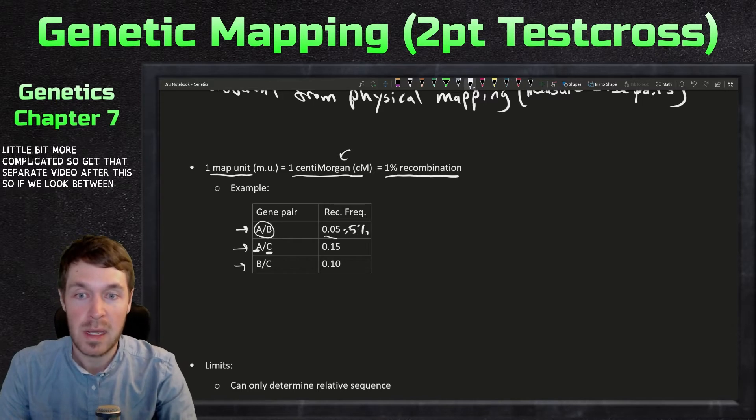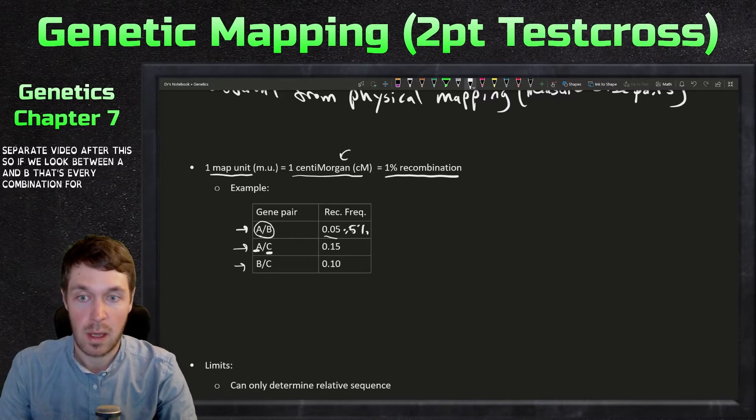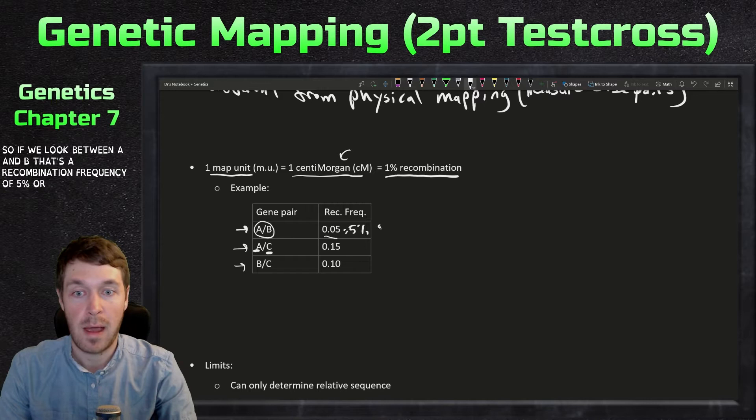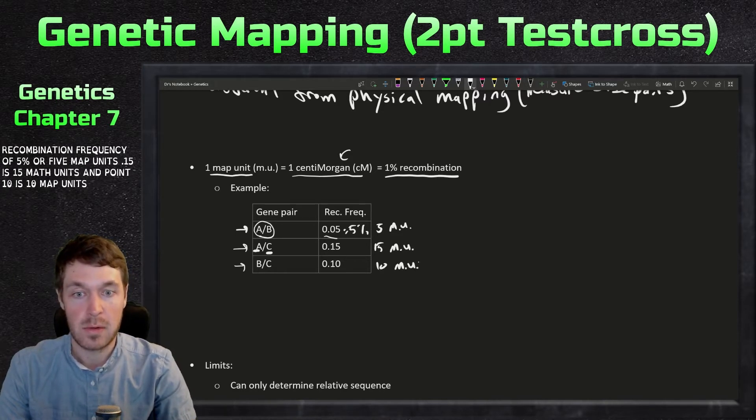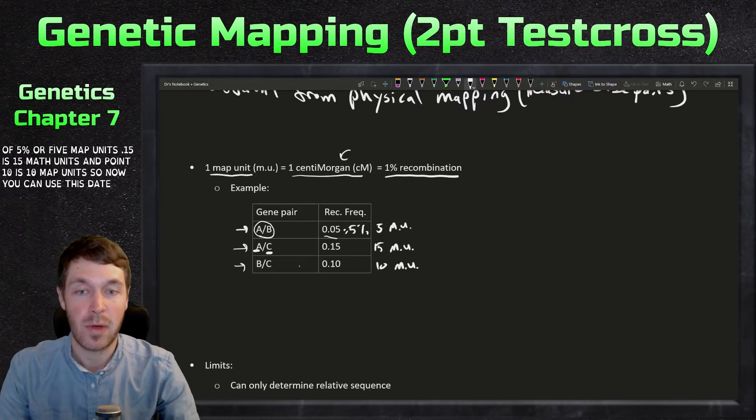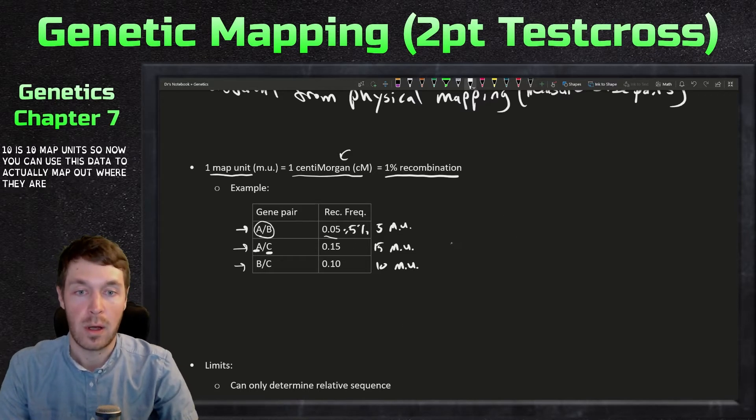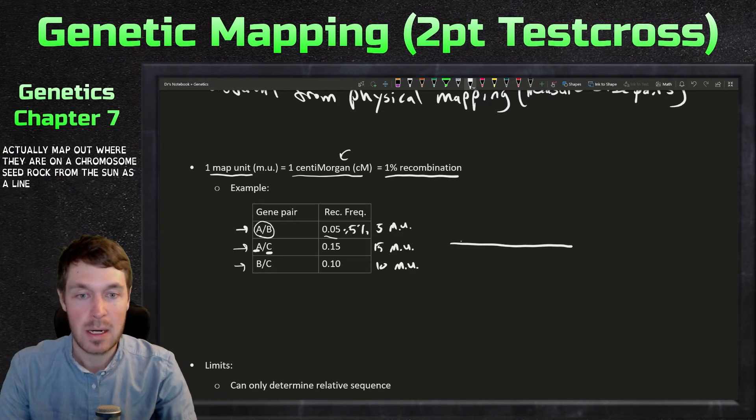If we look between A and B, that's a recombination frequency of 5% or five map units. 0.15 is 15 map units and 0.10 is 10 map units. So now you can use this data to actually map out where they are on a chromosome.